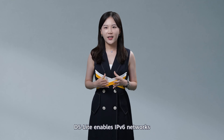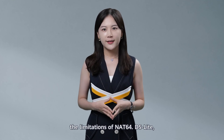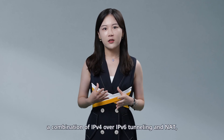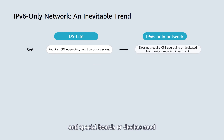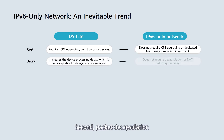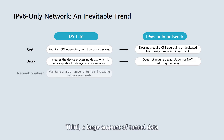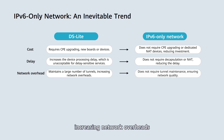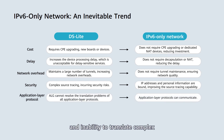To summarize, DS-Lite enables IPv6 networks to carry IPv4 services. Similar to NAT64, DS-Lite — a combination of IPv4 over IPv6 tunneling and NAT — has similar limitations. First, the CPE needs to be upgraded and special boards or devices need to be introduced for NAT, all of which is costly. Second, packet decapsulation and NAT increase device processing delay, making it unsuitable for delay-sensitive services. Third, a large amount of tunnel data needs to be maintained, increasing network overheads and potentially affecting network quality. Fourth, some limitations of NAT, such as difficulty in source tracing and the inability to translate complex protocol packets like HTTPS packets, also exist in DS-Lite.